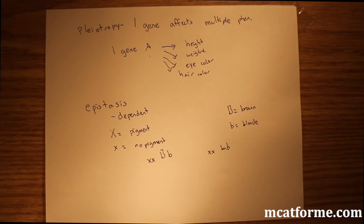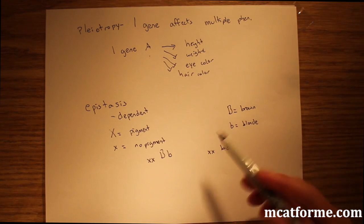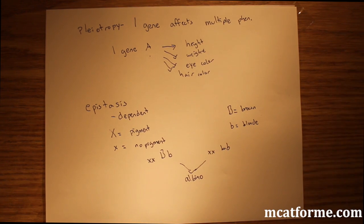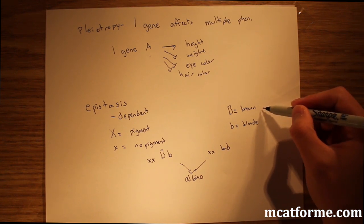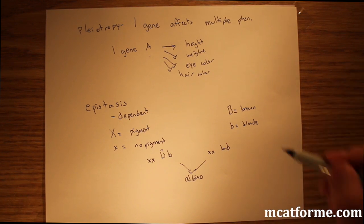This is when epistasis comes into play. The individual is homozygous recessive for the pigmentation, meaning they have no pigmentation in their skin or hair. That means no matter, regardless of what the actual gene for hair color is, be it brown or blonde, no matter what they're going to be albino. They're going to have no pigmentation in their hair or skin, regardless of whether or not their gene for hair color shows for them to be brown or blonde. So it's epistatic and dependent on the pigmentation gene.